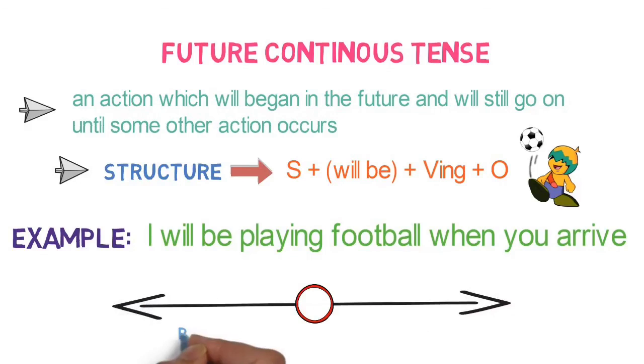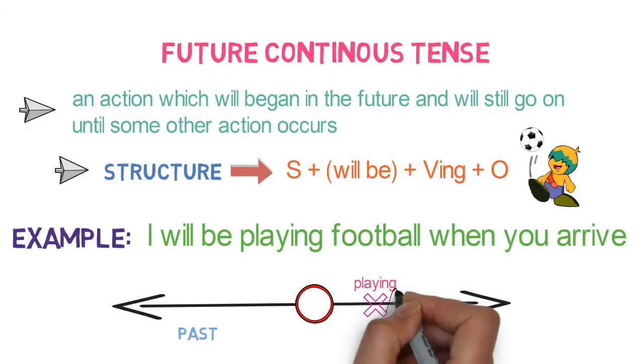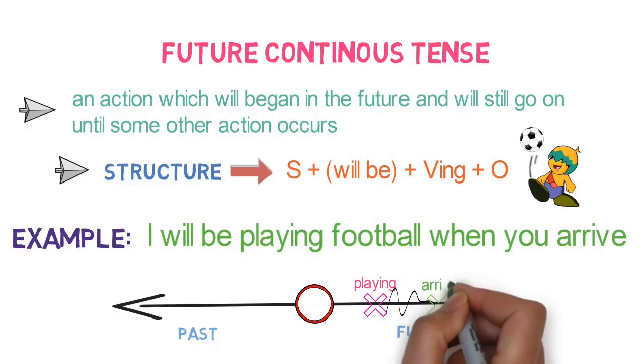In the timeline, my action of playing football will be on the right side and will go on and on until another action of arriving comes. I hope you are clear with continuous tenses.